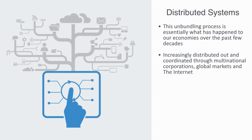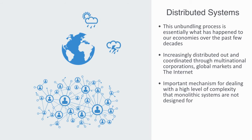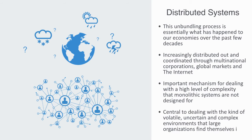We can outsource tasks and bring together teams from the other side of the planet in just a few clicks. Today, small businesses can build and orchestrate global supply networks online. This unbundling process is an important mechanism for dealing with a high level of complexity that monolithic systems are not designed for. It is central to dealing with the kind of volatile, uncertain, and complex environment that large organizations find themselves within in the 21st century. This unbundling process is part of the significance of networks within post-industrial economies.